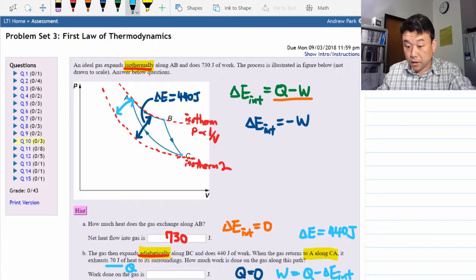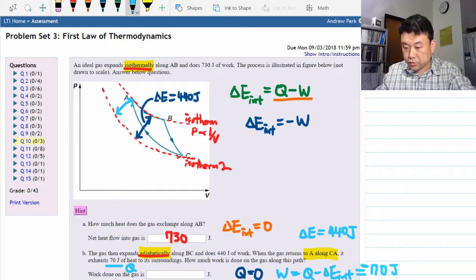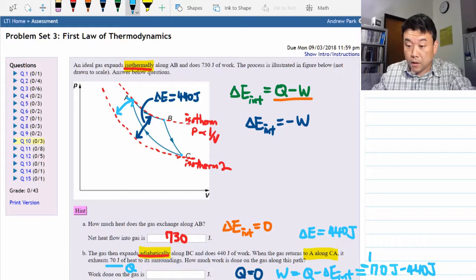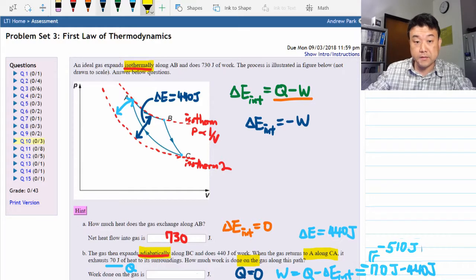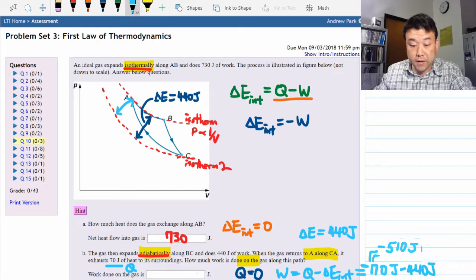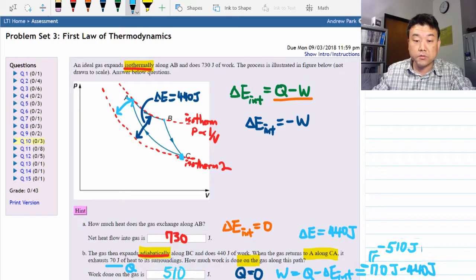So for the numbers given that would be minus 70 joules minus 440 joules or minus 510 joules. And because this is negative work done, that's why it's saying work done on the gas. So they are expecting a positive answer. So you say 510 joules of work done on the gas as the gas moves from point C to A.